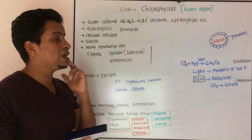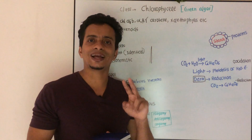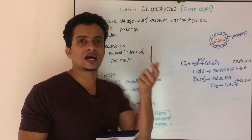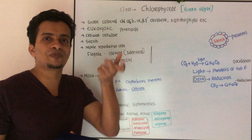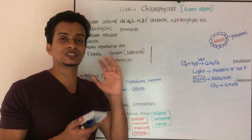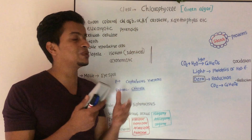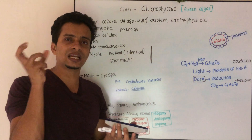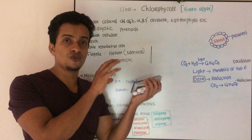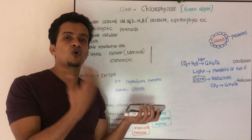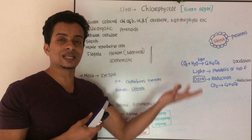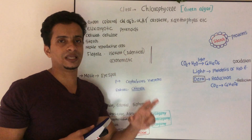What do we mean by principal pigments and accessory pigments? Those pigments which play the main role in photosynthesis are principal pigments. Accessory pigments help the principal pigments from photo-oxidation — that is, light-induced damage.